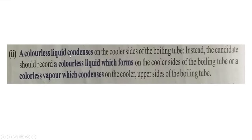Writing 'a colorless liquid condenses on the cooler sides of the pouring tube' is wrong because a liquid cannot condense — what condenses is moisture or a vapor. The correct way is to write either 'a colorless liquid is formed' or 'a colorless vapor condenses on the cooler parts of the boiling tube.'